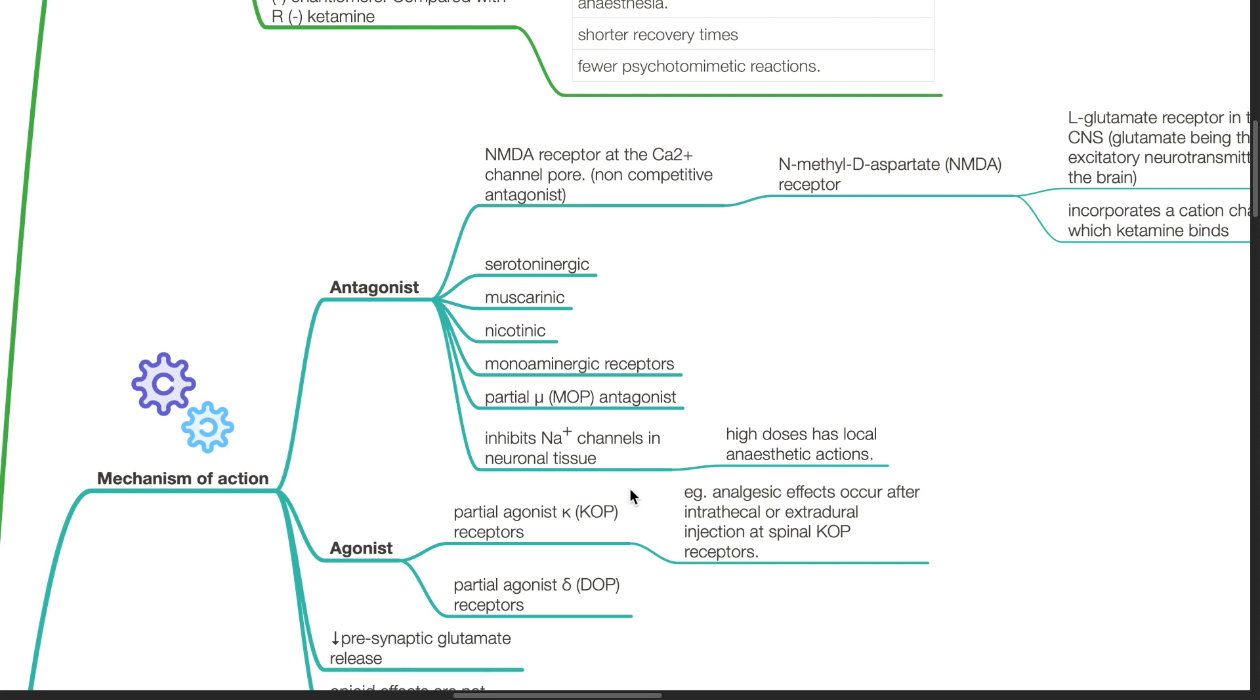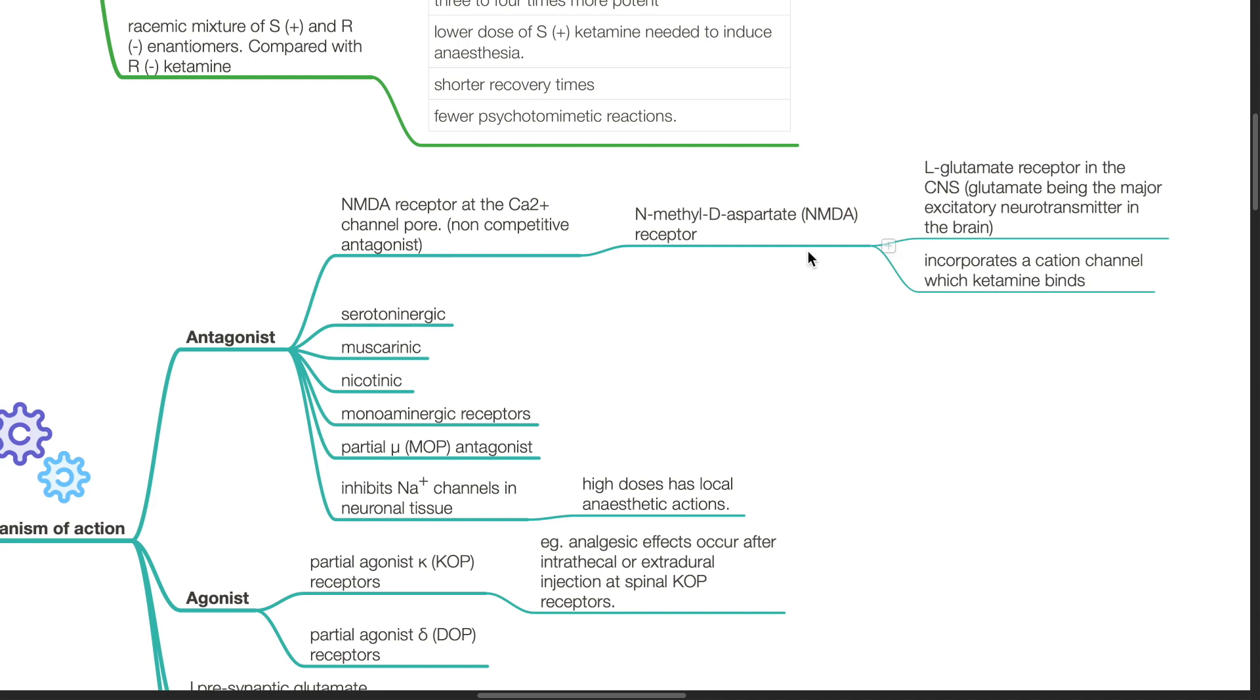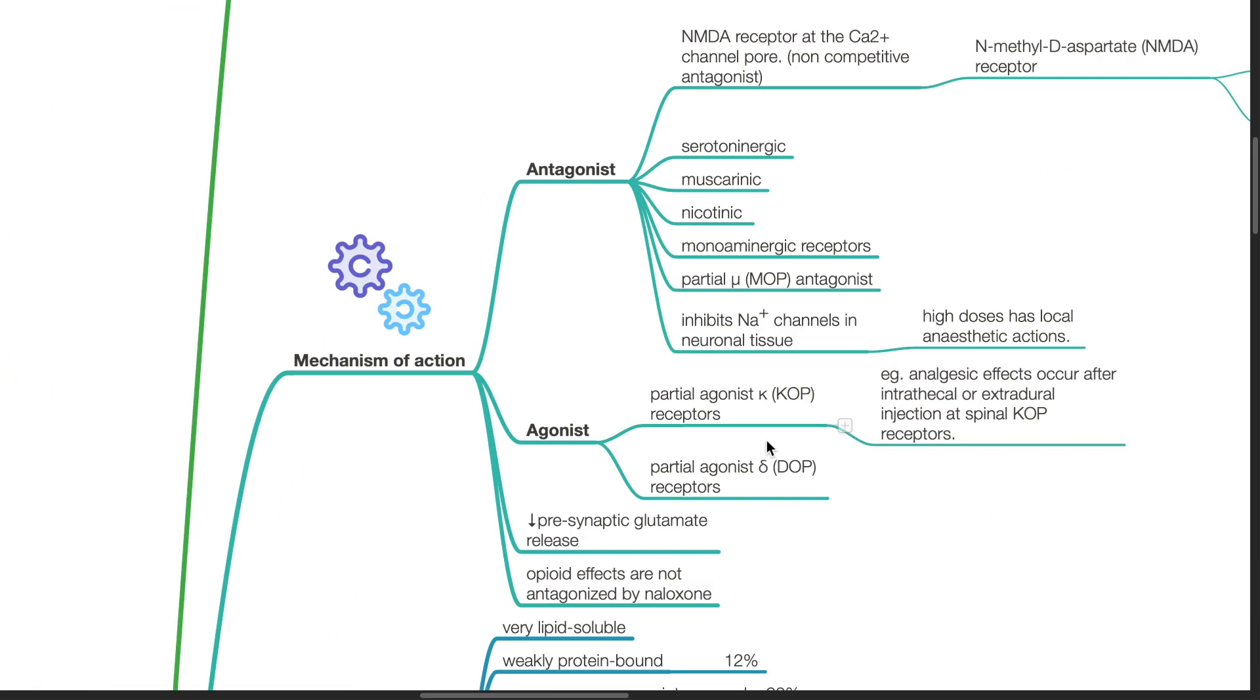High doses of ketamine have local anesthetic actions. The NMDA receptor is an L-glutamate receptor in the CNS. Glutamate is the major excitatory neurotransmitter in the brain. It incorporates a cation channel which ketamine binds. Ketamine is also a partial agonist at the KOP and DOP receptors.